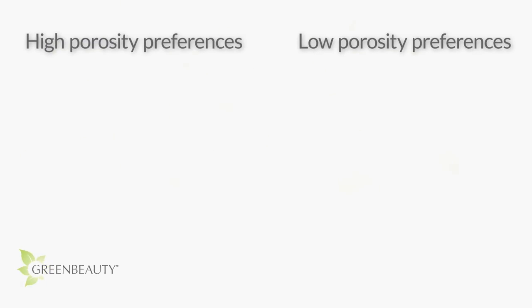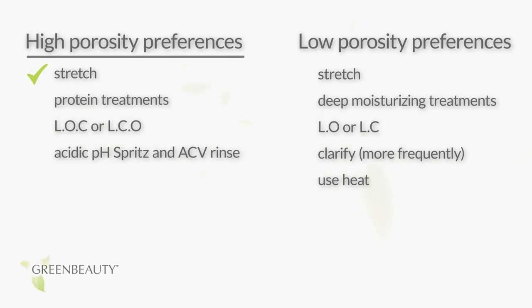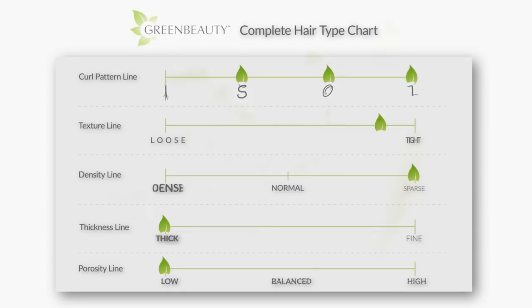Let's compare their preferences side by side so you get a better idea of their differences. For high porosity hair types, lifted cuticles make your hair strands clump together easier, creating complicated tangles — it's even worse if your hair is dense and your strands are fine. So keeping your hair stretched is a great way to avoid this.